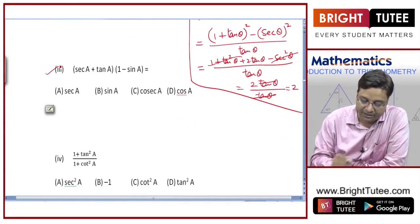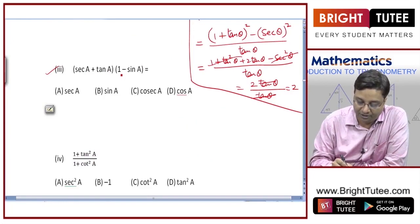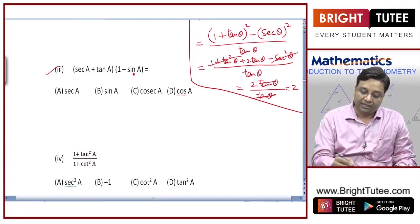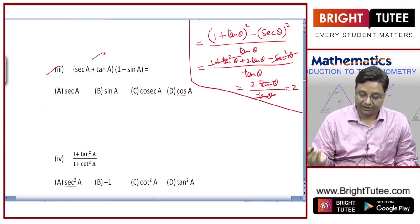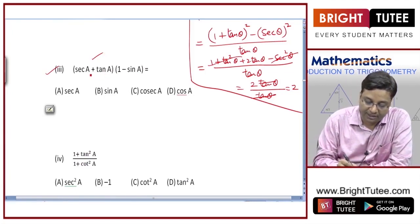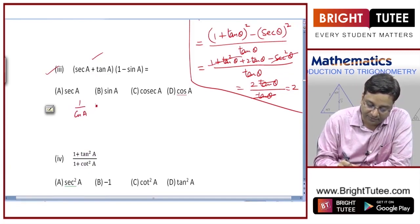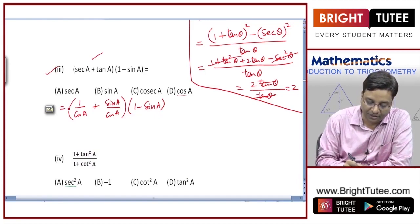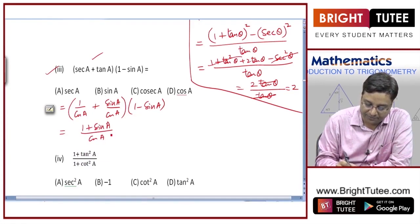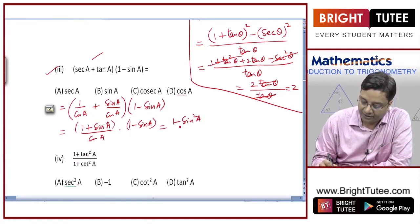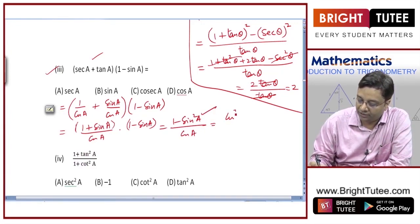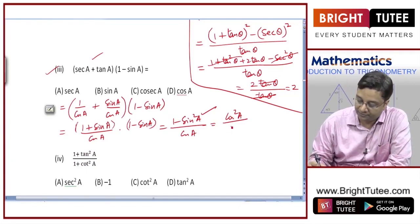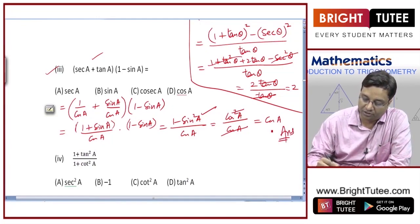For part 3: prove (secA + tanA)(1 − sinA). Writing secA as 1/cosA and tanA as sinA/cosA gives (1 + sinA)/cosA times (1 − sinA). The numerator becomes 1 − sin²A, which equals cos²A by the identity sin²A + cos²A = 1. So the result is cos²A divided by cosA, which simplifies to cosA. The answer is D.